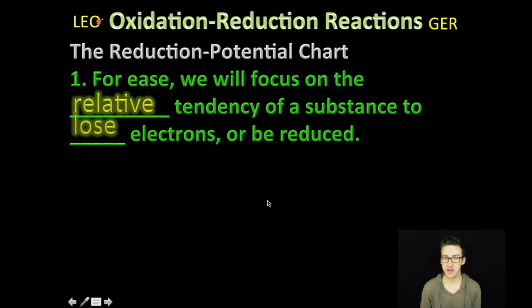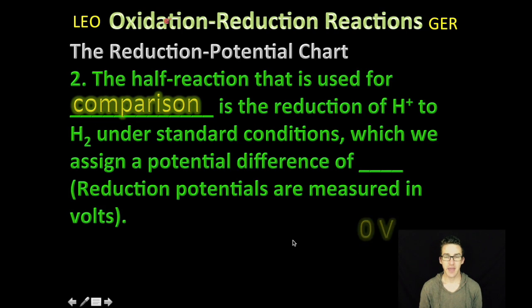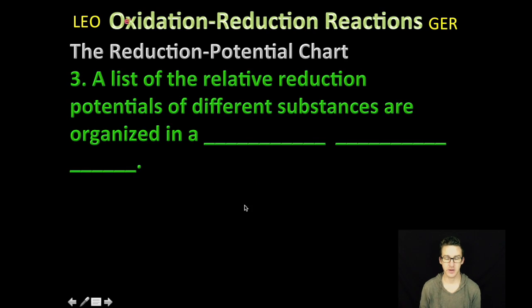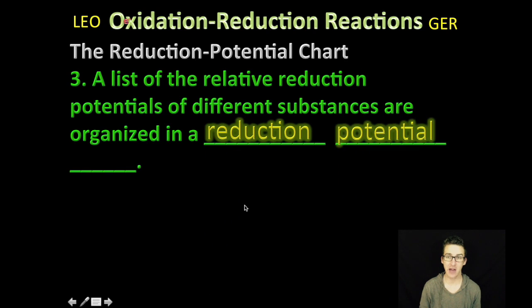For ease, we're just going to focus on the relative tendency for a substance to lose electrons or be reduced. The half reaction we're going to use for comparison is the reduction of the hydrogen ion to hydrogen gas under standard conditions, which we assign a potential difference of zero volts. That's our starting point for comparison. Then we just make a list - how do things compare to the reduction potential of hydrogen ion to make hydrogen gas? That makes a reduction potential chart.